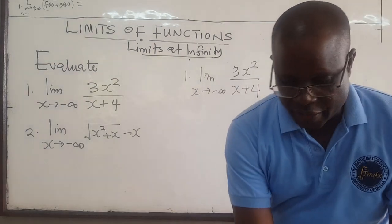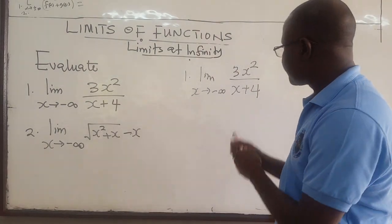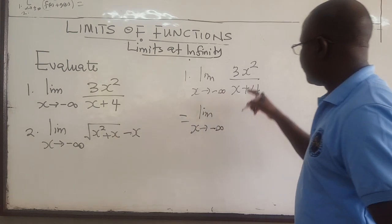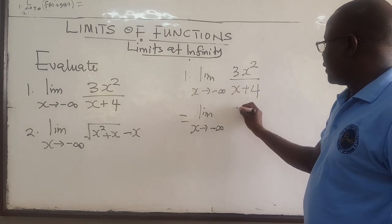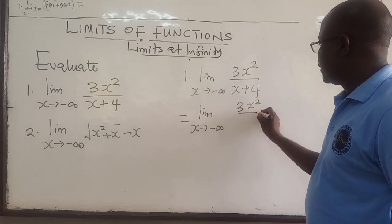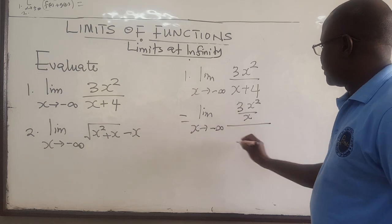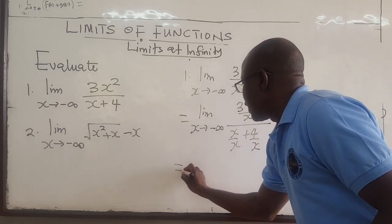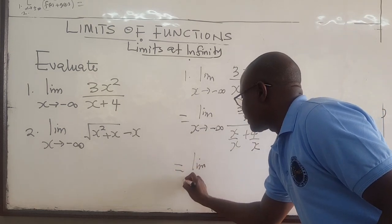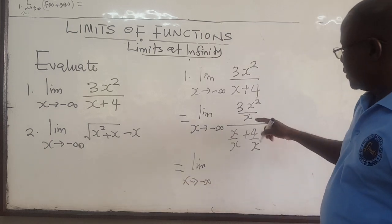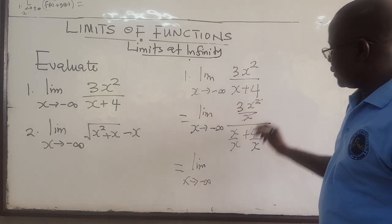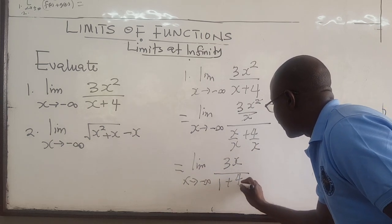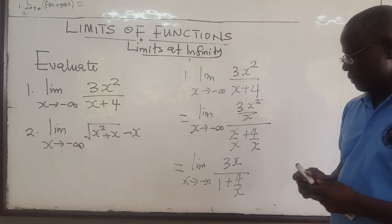When you do that, you're going to get the limit as x approaches negative infinity of 3x squared divided by x, over x over x plus 4 over x. Then, this x cancels one of those in the numerator, giving 3x up top, and the denominator becomes 1 plus 4 over x.